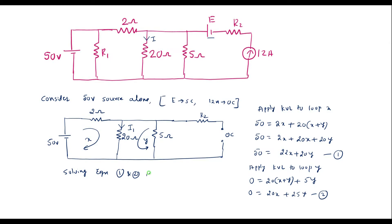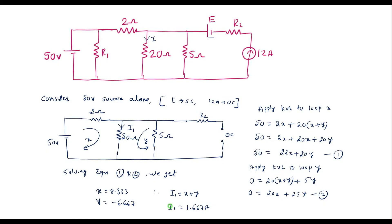Solving equations 1 and 2, we get X = 8.333 and Y = −6.667. Therefore, I1 = X + Y = 1.667 amp. This is the current I1 flowing through the 20 ohm resistor when we consider the 50 volt source alone.